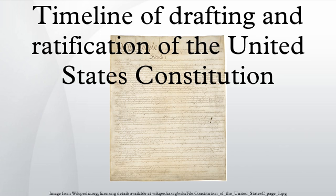June 2: Ratifying convention begins in Virginia. June 17: Ratifying convention begins in New York. June 18: Ratifying convention begins in New Hampshire. June 21: New Hampshire becomes the ninth state to ratify the Constitution. New Hampshire requests that twelve alterations be made to it. June 21: Having been ratified by nine of the thirteen states, the Constitution is officially established. June 25: Virginia becomes the tenth state to ratify the Constitution. Virginia requests that twenty alterations be made to it.